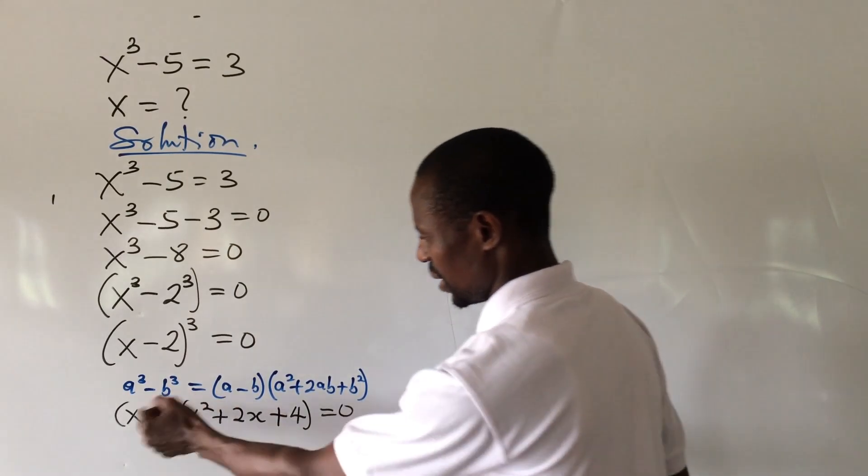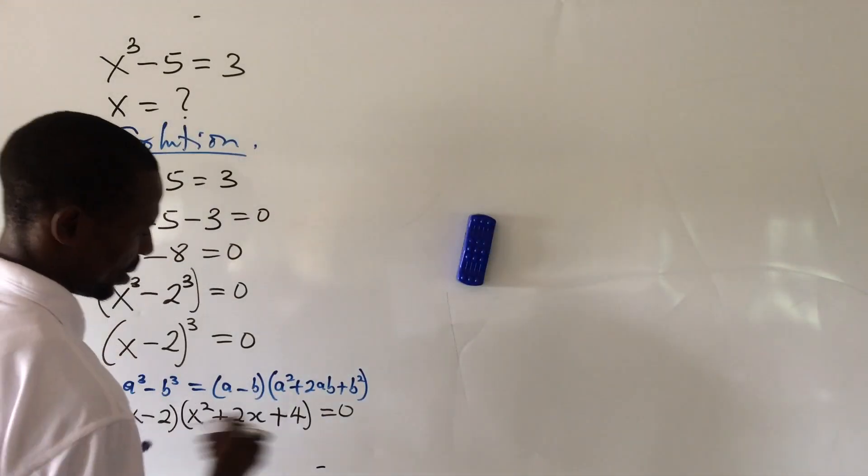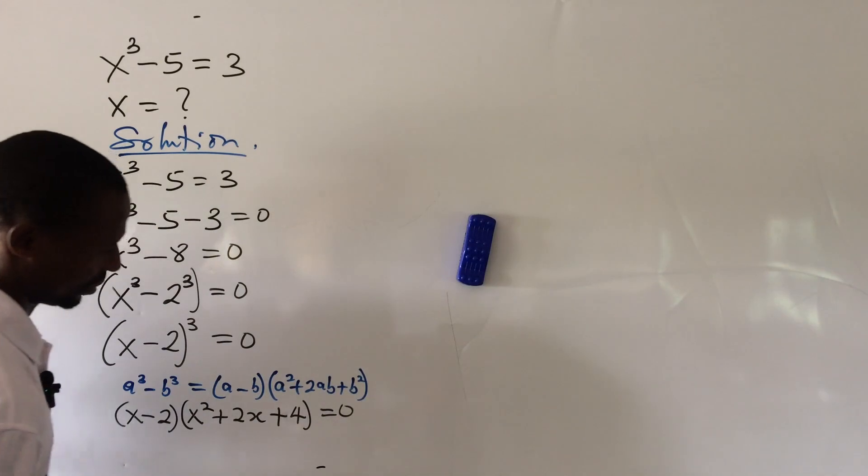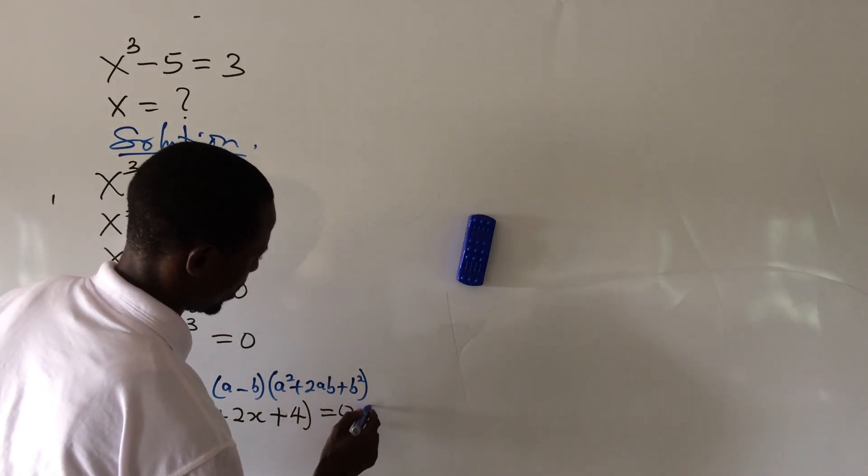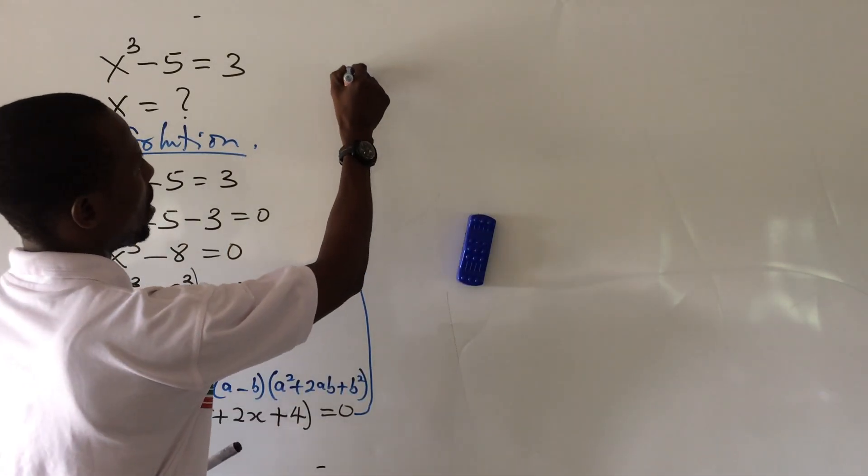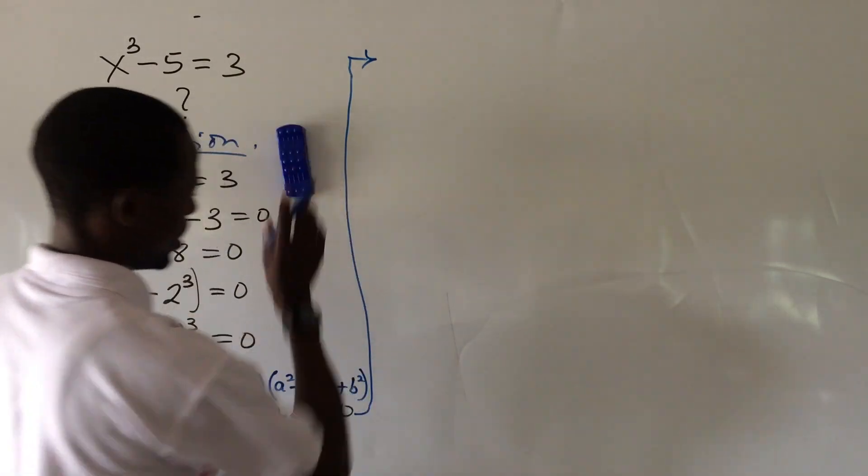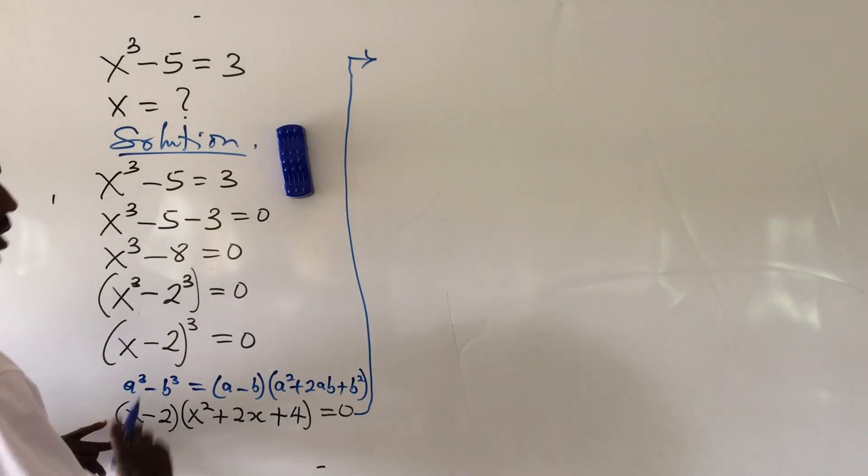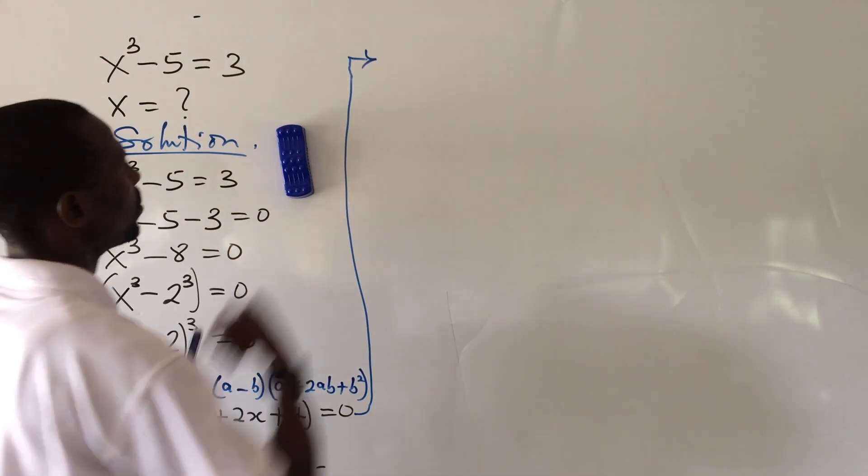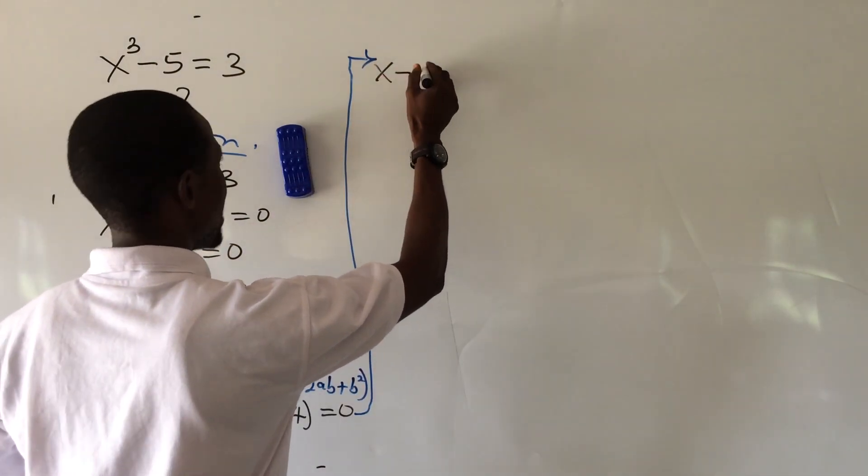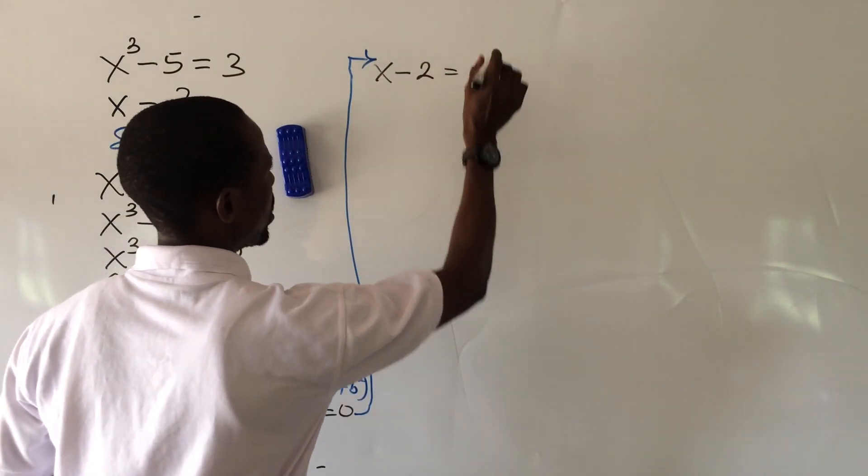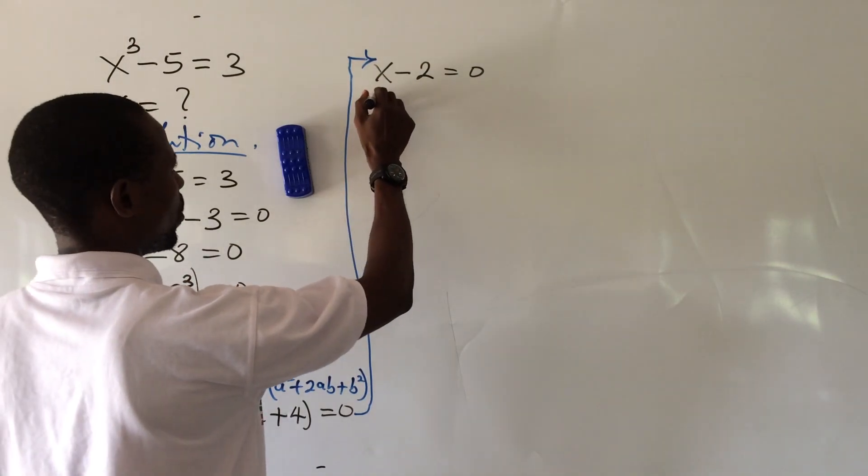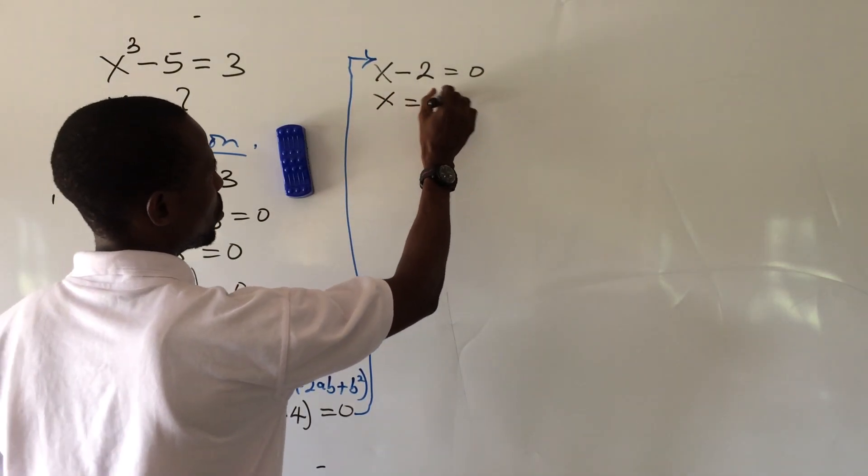So from here, if we apply the zero product rule, this will be equal to 0, this will be equal to zero. So let's go ahead and do that. So from here, let's take from here. So when I equate this to zero...